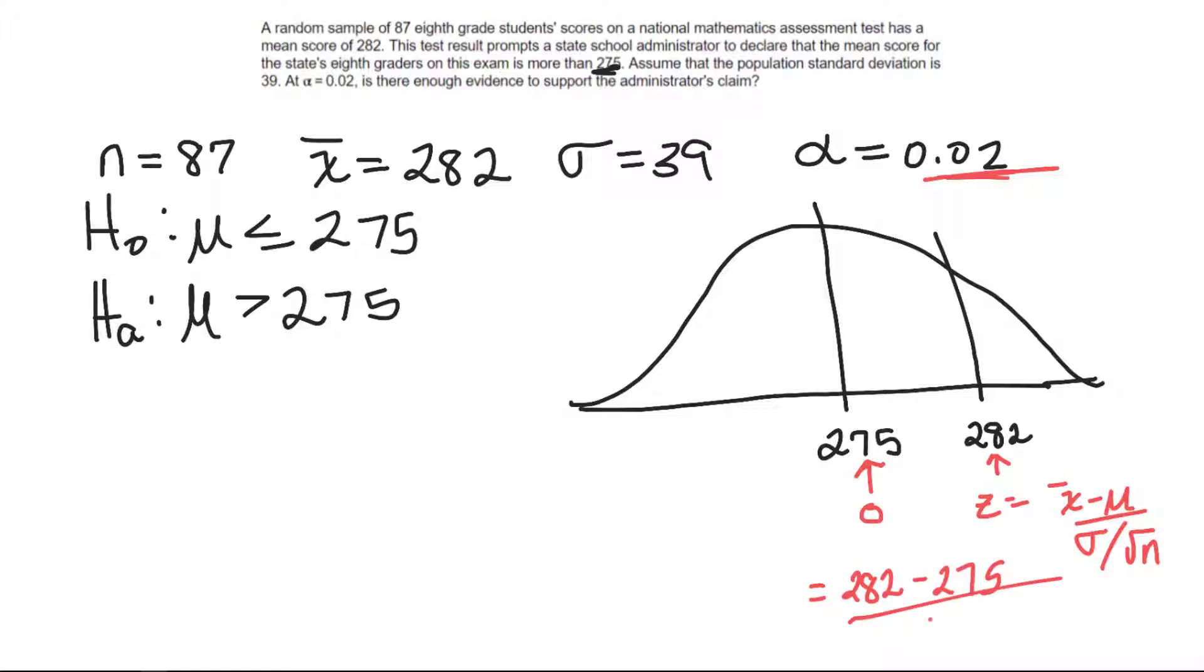all over 39 divided by the square root of the sample size, 87. And when I do that, I get 1.67.